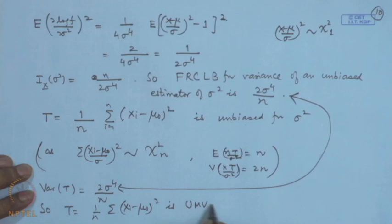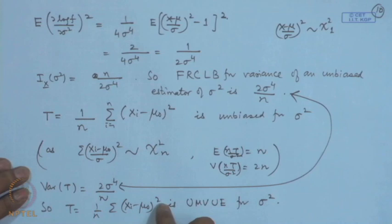Obviously, if μ were not known, we could not have used this estimator. This solution is specific to the one-parameter case where μ₀ is known to us.